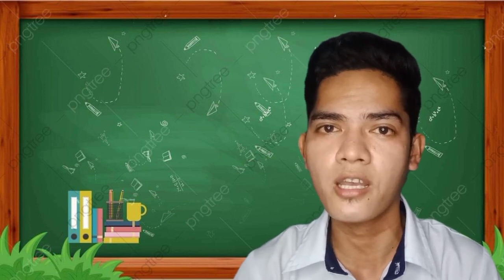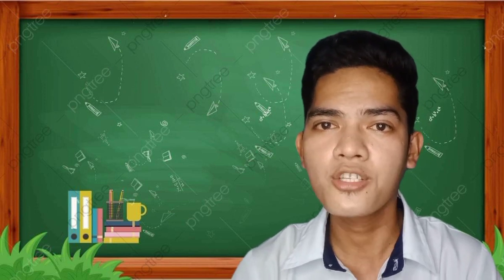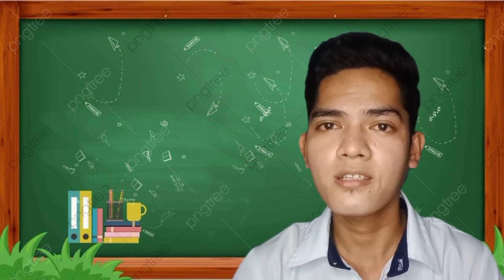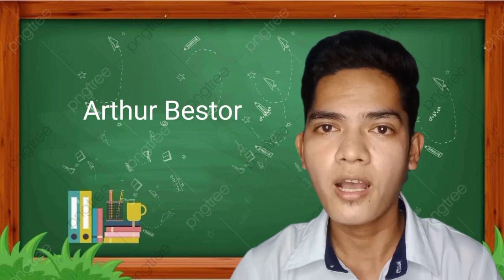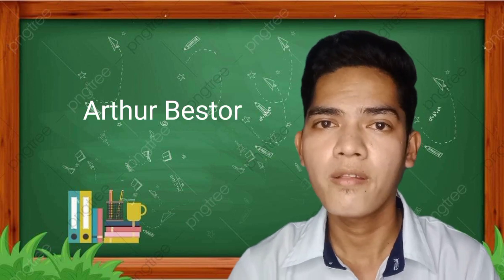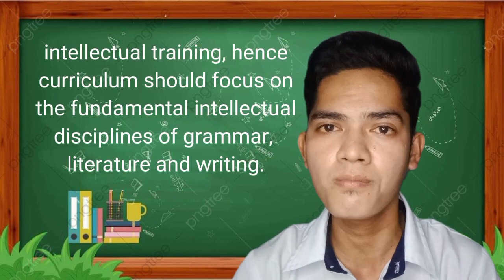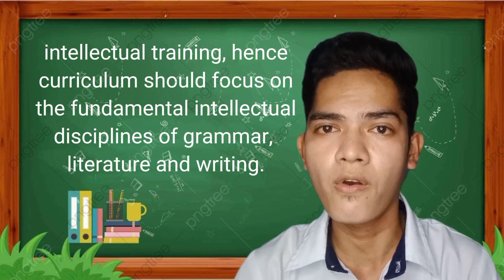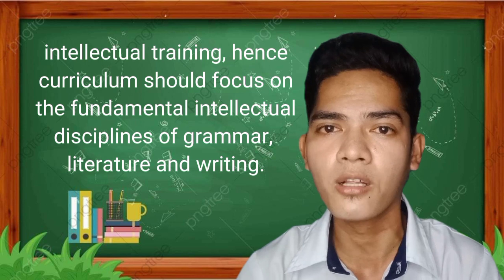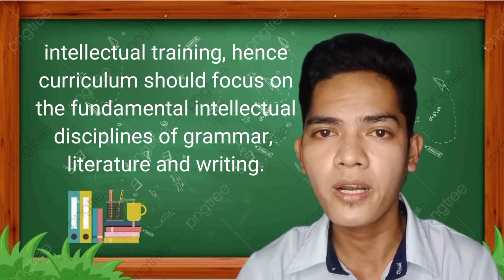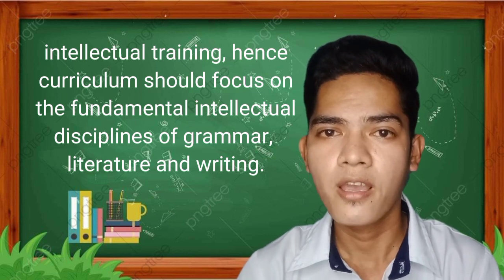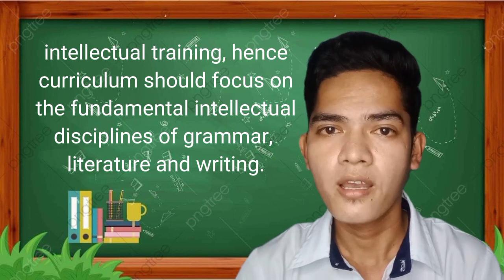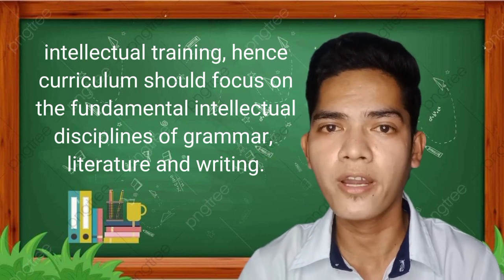Basic education should emphasize the 3 R's, and college education should be grounded on liberal education. Next is Arthur B. Storr, as an essentialist, who believed that the mission of the school should be intellectual training. Hence, curriculum should focus on the fundamental intellectual disciplines of grammar, literature, and writing. It should also include mathematics, science, history, and foreign language.